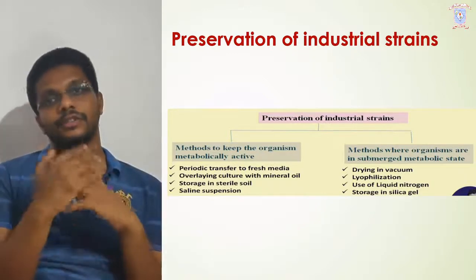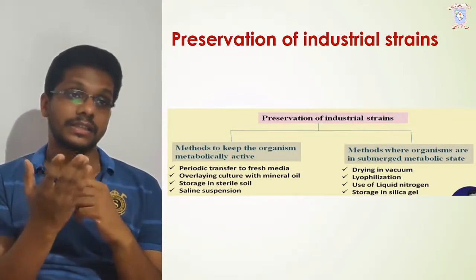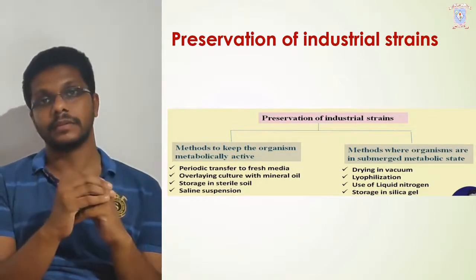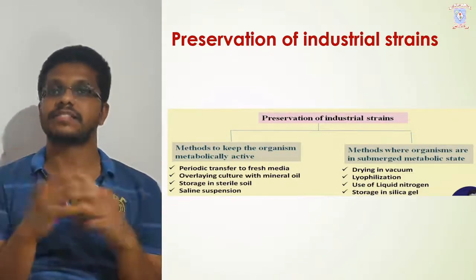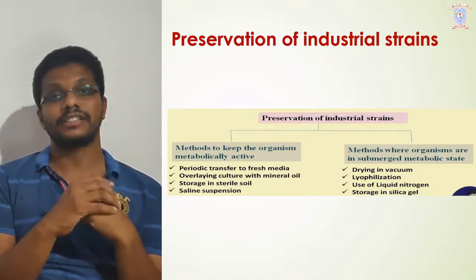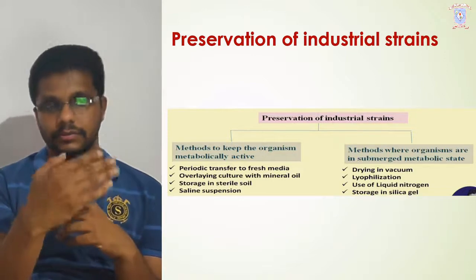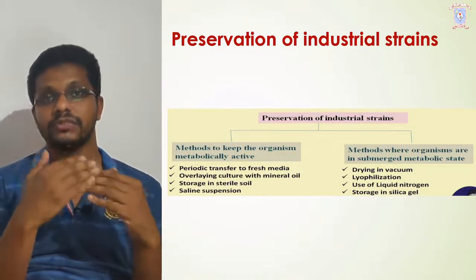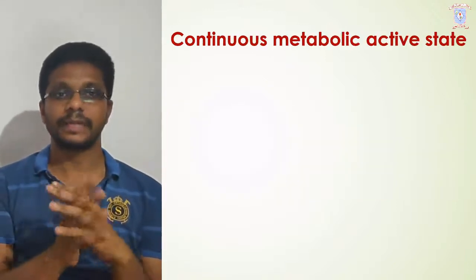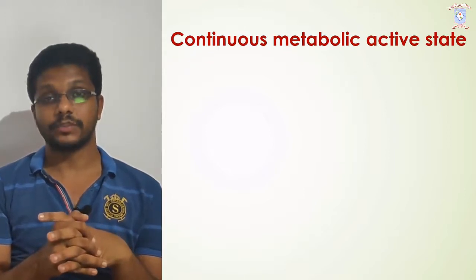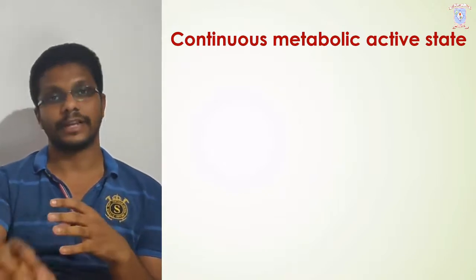In a broad sense, if you want to store a microorganism for a short time — like one month, six months, or a year — metabolically active state storage is preferred. But if you want to store a microorganism for a very long time like 5, 10, or 50 years, the suspended metabolic state storage is more useful. From here onwards we will discuss each and every method under these broad categories. Continuous metabolically active state storage, which is better for short-term storage, is what laboratories commonly use.